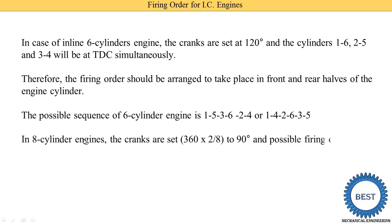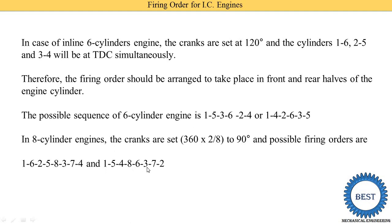In an eight cylinder engine, the cranks are set at 90 degrees. There are four positions available between TDC and BDC — two cylinder pistons are at TDC, two at BDC, and two other pairs are at intermediate positions between TDC and BDC. The possible firing orders are: 1-6-2-5-8-3-7-4, or 1-5-4-8-6-3-7-2, or 1-8-4-3-6-5-7-2, or 1-8-7-3-6-5-4-2. As the number of cylinders increases, the number of possible firing order combinations also increases.